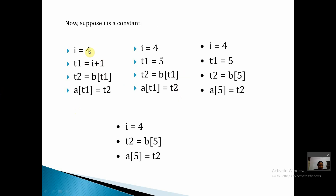In another example, i is a constant value of 4. Instead of computing i plus one, we can directly write 5 (phi). Since T1 is also a constant, wherever T1 is used we substitute the constant value directly. This removes the need for the temporary variable T1, giving optimized code: i equals 4, T2 equals b of 5, and A of 5 equals T2.